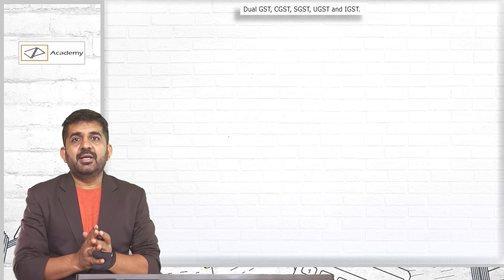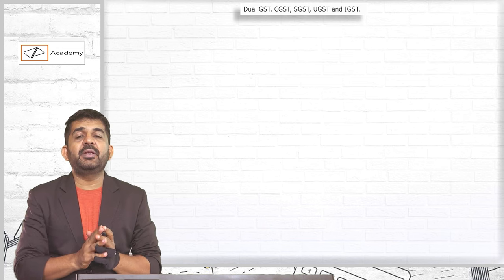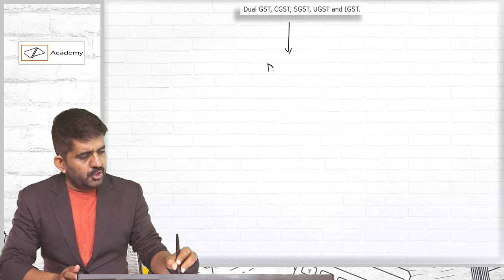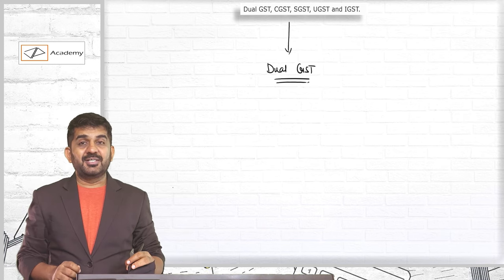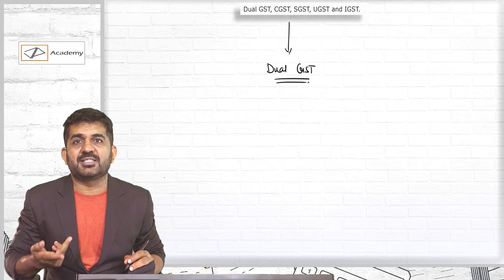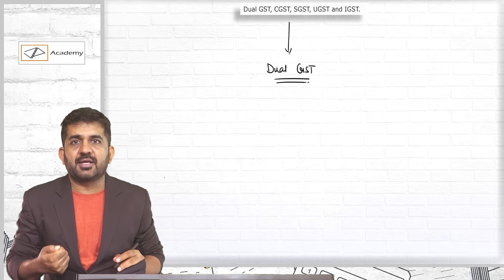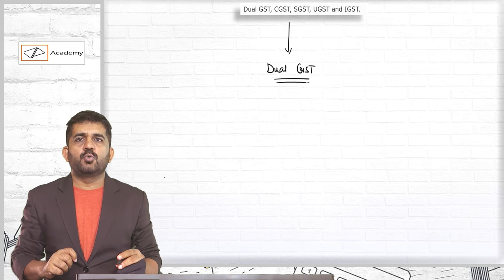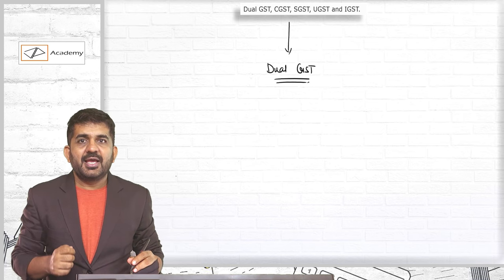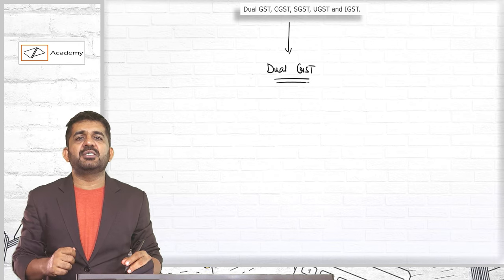Next is dual GST. India as a country has adopted the concept of dual GST — that is, if goods are sold or services are provided, there will be two taxes applicable: one is the tax of the state and one is the tax of the center. This is the concept of dual GST. So we have: CGST — Central Goods and Service Tax; SGST — State Goods and Service Tax; UGST — Union Territory Goods and Service Tax; and IGST — Integrated Goods and Service Tax. All will have their separate laws, and SGST for each state will be different.